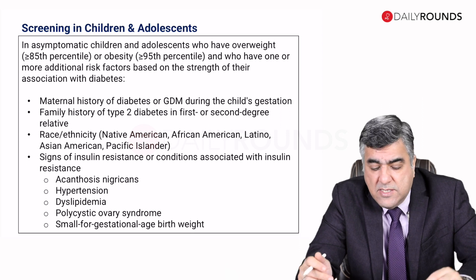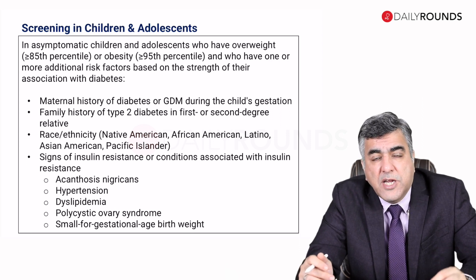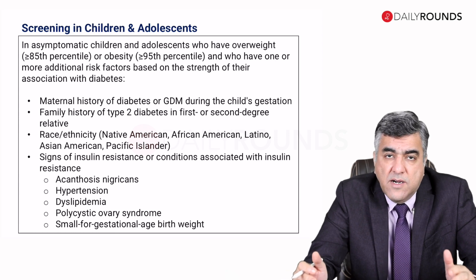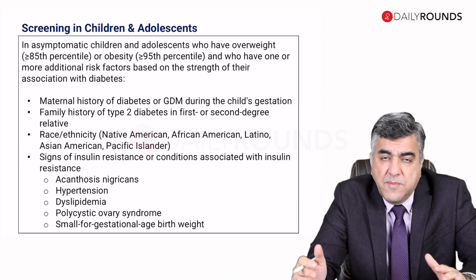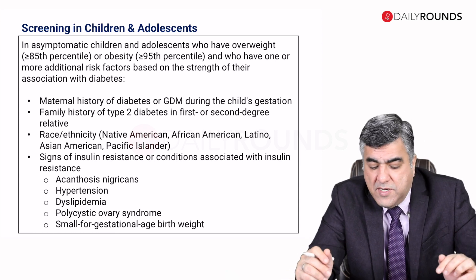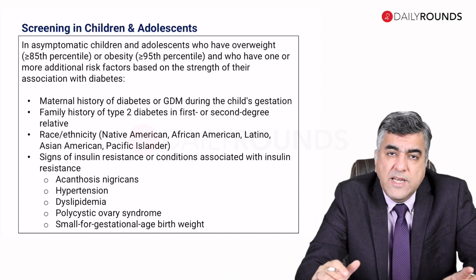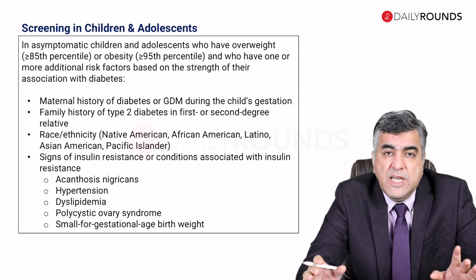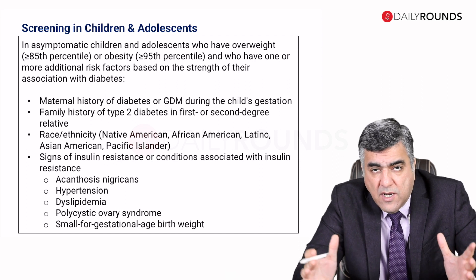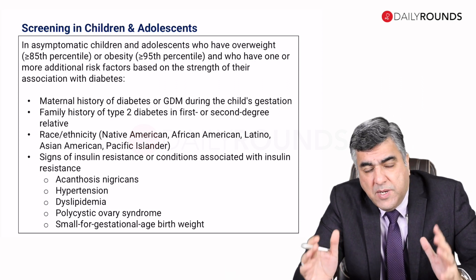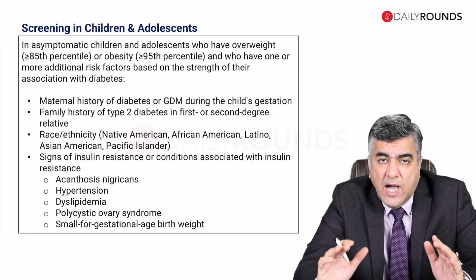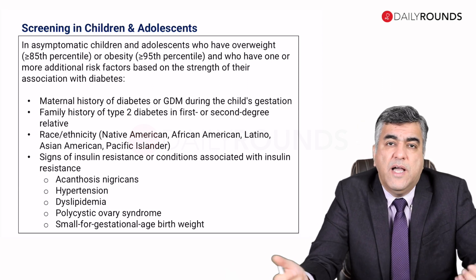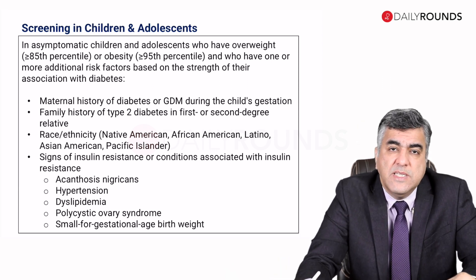Signs of insulin resistance include acanthosis nigricans, presence of hypertension, dyslipidemia, polycystic ovarian syndrome in younger girls and females, or a history of being small for gestational age birth weight. Those considered premature or with smaller birth weight are all individuals predisposed to higher risk of developing prediabetes and diabetes, and these are the ones where screening should be prioritized.